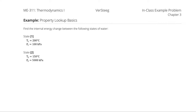Find the internal energy change between the following states of water. At state 1, we have water at a temperature of 200 degrees Celsius and 100 kilopascals. At state 2, we have a temperature of 150 degrees Celsius and 5000 kilopascals.